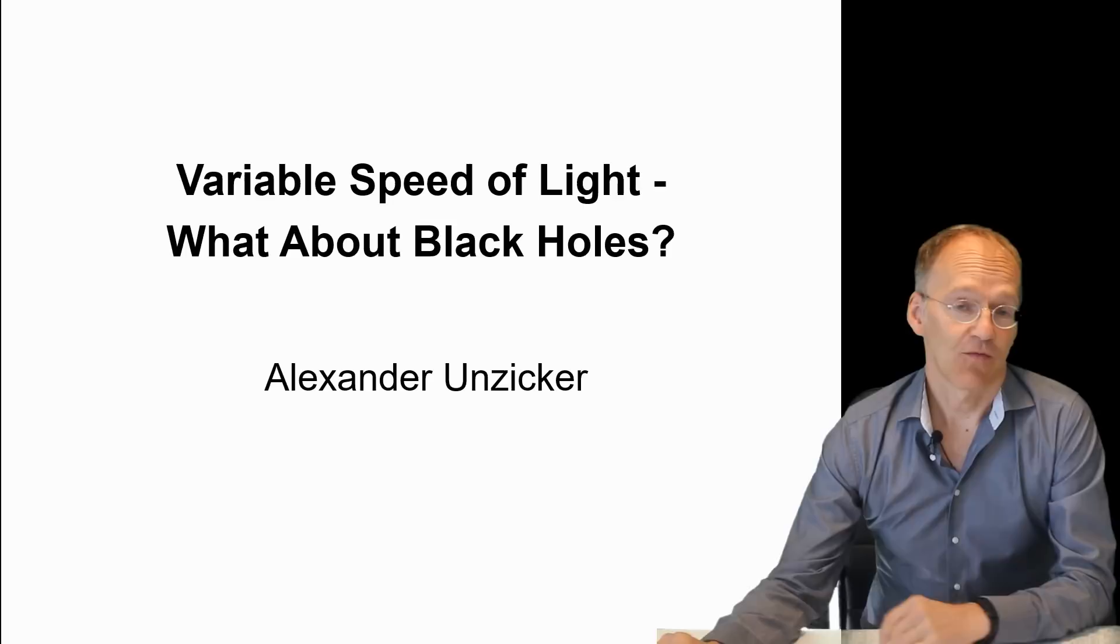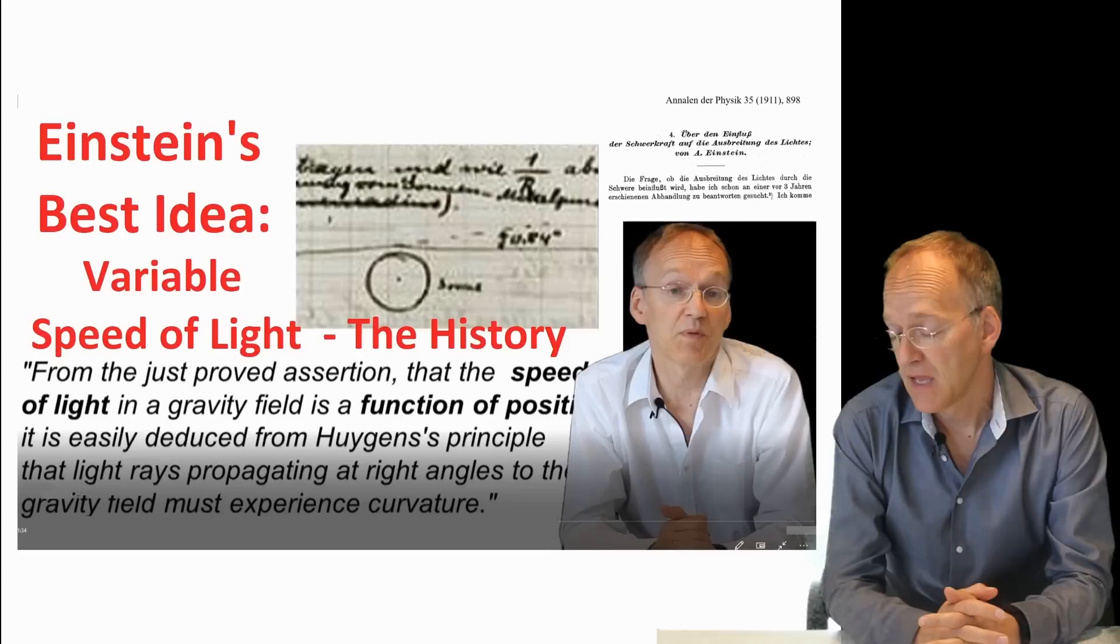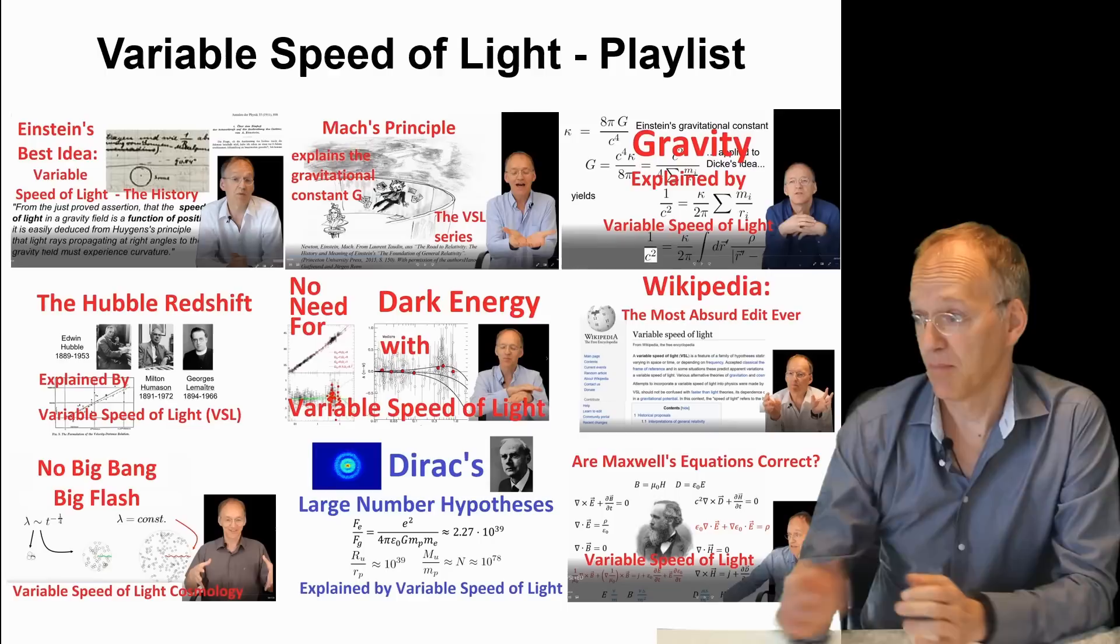Why consider variable speed of light at all? Because it was Einstein's very first idea when he thought about general relativity. All this is in my history video, and you might also look at my playlist on variable speed of light.